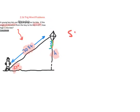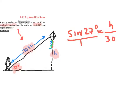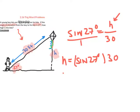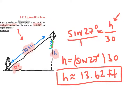This just becomes: the sine of 27 degrees equals h over 30. In a previous video, we learned that when our unknown is in the numerator, it's simply the sine of 27 degrees times 30, and this gives us approximately 13.62 feet. And that's all it is — just set up an equation and solve it.